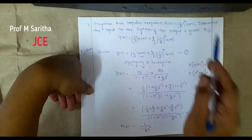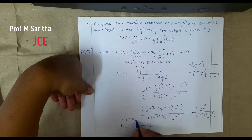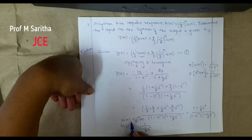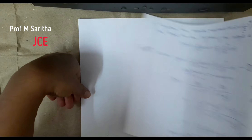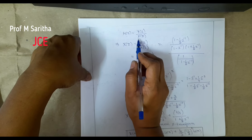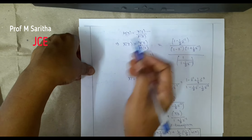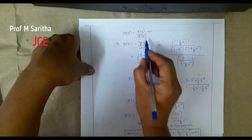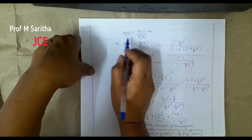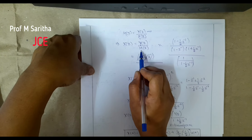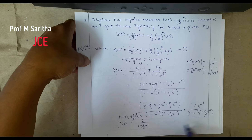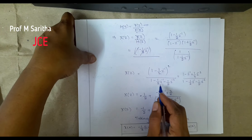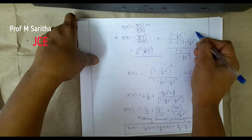H(n) is given as (1/2)^n u(n), so applying the Z-transform: H(z) = 1/(1 − (1/2)z^(−1)). Since H(z) = Y(z)/X(z), rearranging gives X(z) = Y(z)/H(z). Substituting the expressions for Y(z) and H(z) and simplifying, the (1 − (1/2)z^(−1)) term from H(z) comes into the numerator.